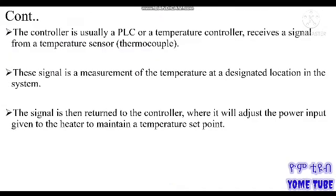The controller is a PLC or a temperature controller. PLC is a programmable logic controller. The temperature controller receives a signal from a temperature sensor thermocouple. The temperature sensor is of type NA — the thermocouple is a thermocouple. The sensor sends a signal to the set point input. This signal is a measurement of the temperature at a designated location.